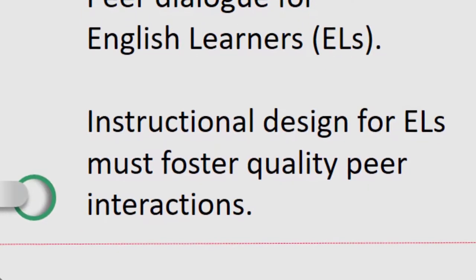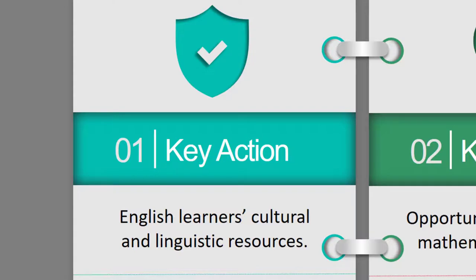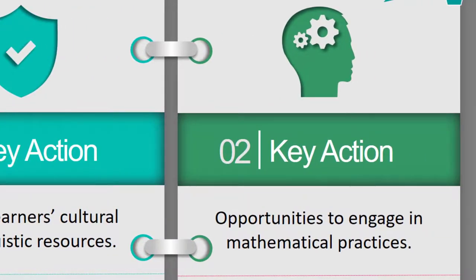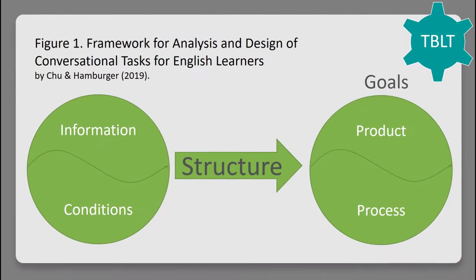An instructional design for English learners must foster quality peer interaction. Few and Hamburg stated in 2019 that recent studies indicate two key actions in mathematical instruction for English learners: first, the importance of cultural and linguistic resources as they work on challenging mathematical tasks; and secondly, offering English learners explicitly supportive opportunities to engage in mathematical practices while having productive discourse with their peers. Few and Hamburg developed a framework in 2019 to show the flow and connections between the components of an interactive task, especially to achieve the goals of a task, including both product and process.